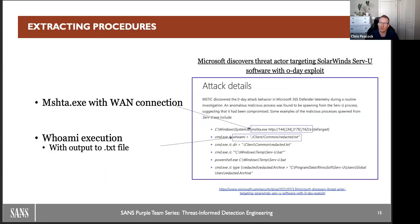Looking at a Microsoft report as an example, we see that mshta.exe is making an outbound call to a port 443 address — something we can replicate in our environment and do detection engineering around. We also see 'whoami' execution outputting to a .txt file. We're actually getting down to those procedures the adversary is running, which allows us to test it in our environment, see if it fires alarms, and if not, do detection engineering around it. That's what it means to be threat-informed.